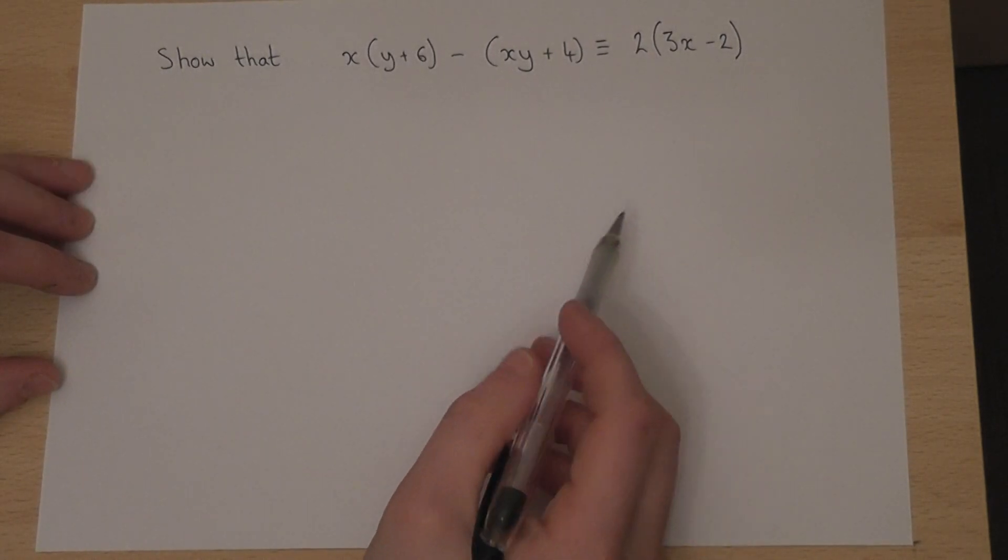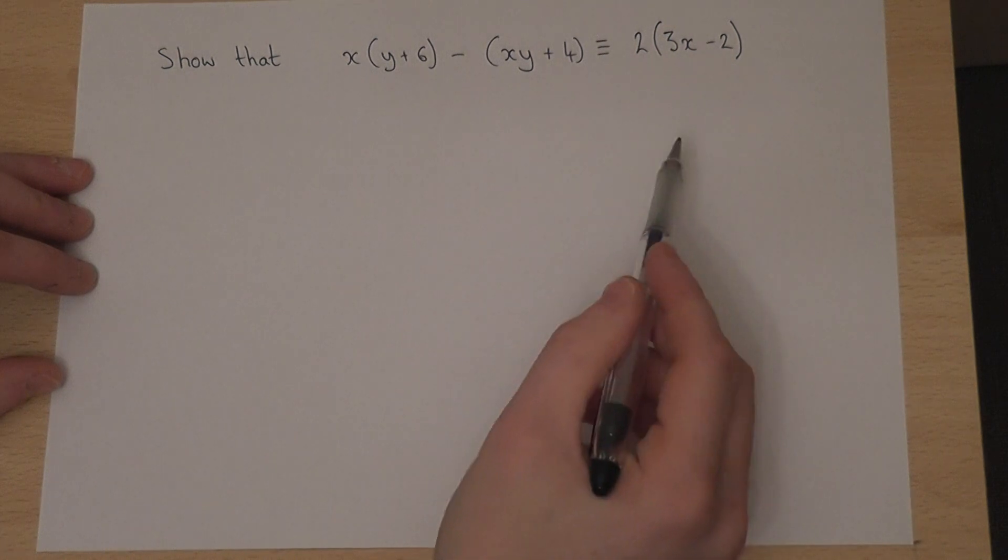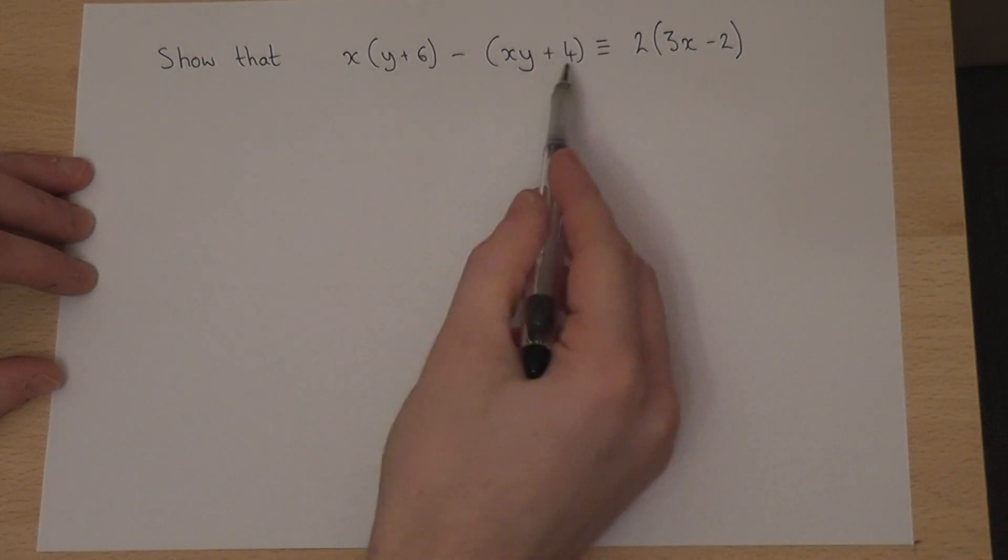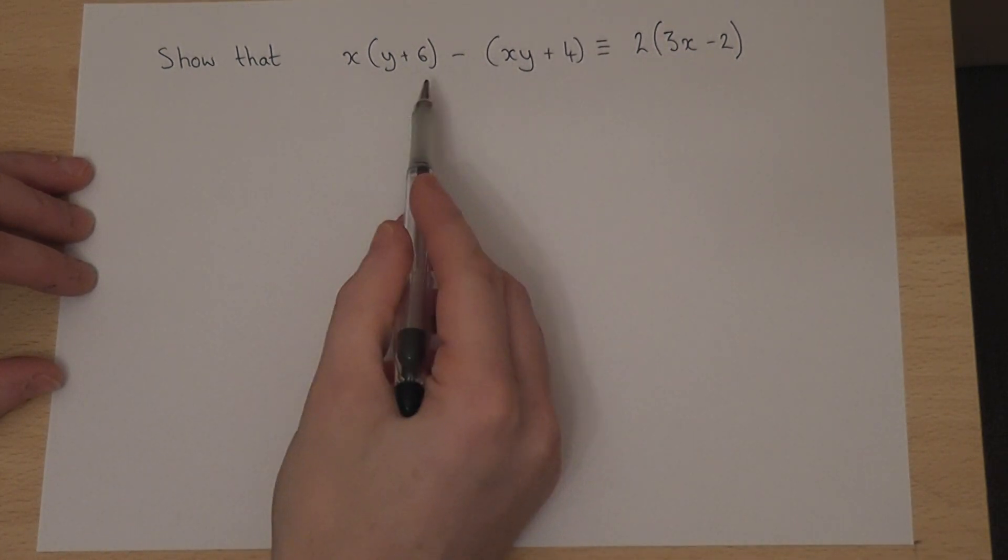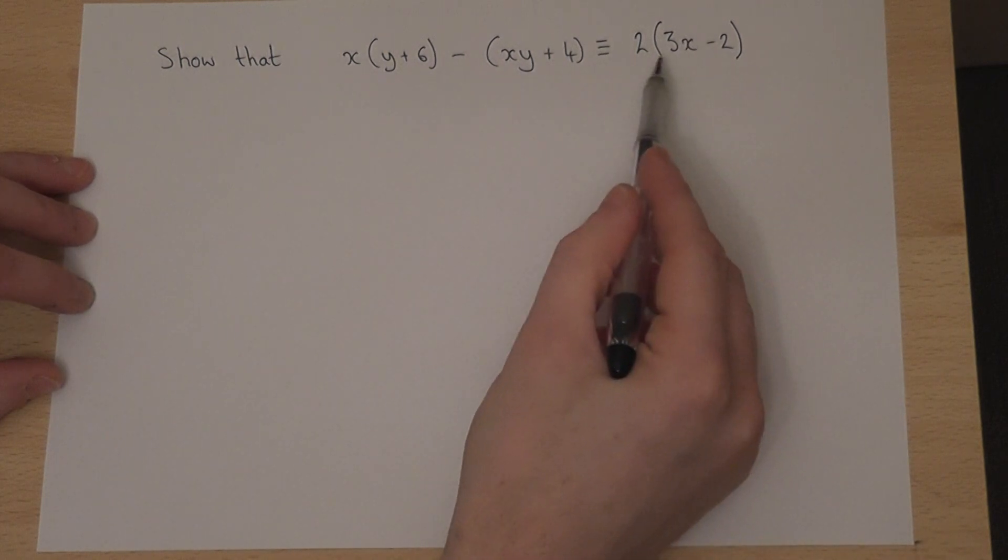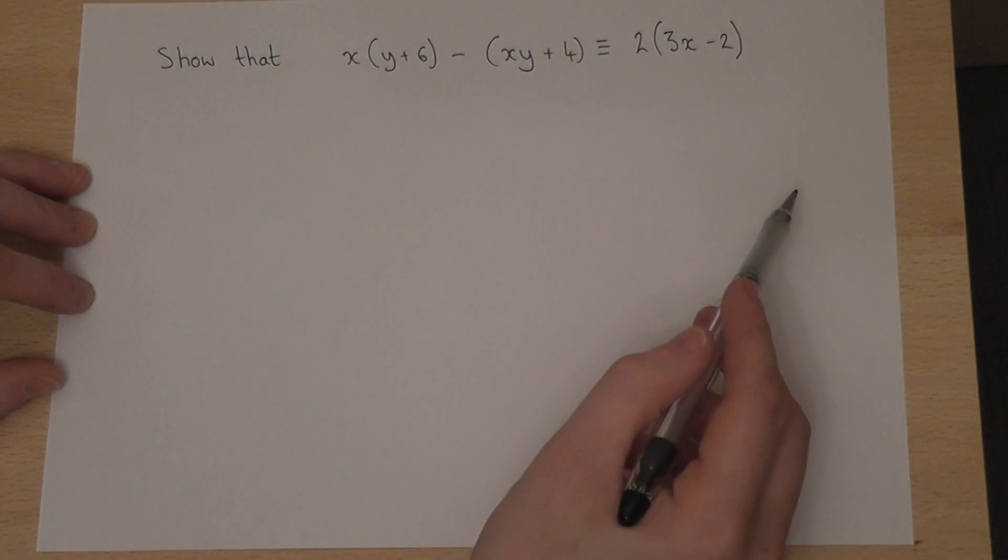In this question, we're asked to show an identity, which is that if we expand the left-hand side, the answer will give us the thing on the right-hand side.